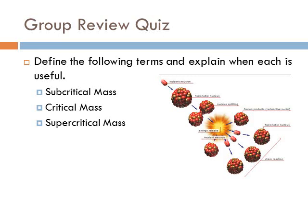You should also know the definitions of these key terms. Subcritical mass is when the material is not very refined, so for every time you split an atom, you only split less than one additional atom on average. That means the reaction will eventually die off. We usually find subcritical mass in nature.